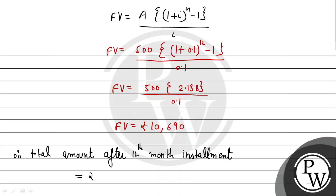That will be equal to rupees 10,690 multiplied by (1 plus i). So this is equal to 10,690 multiplied by - i की value कितनी है?